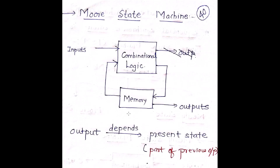If I talk about a Moore state machine, my output just depends upon the present state — that is the part of the previous output — but doesn't depend upon the present input. I hope I am very clear with this and you have got a better understanding. The Moore state machine basically depends upon just the present state, that is a part of my previous output.